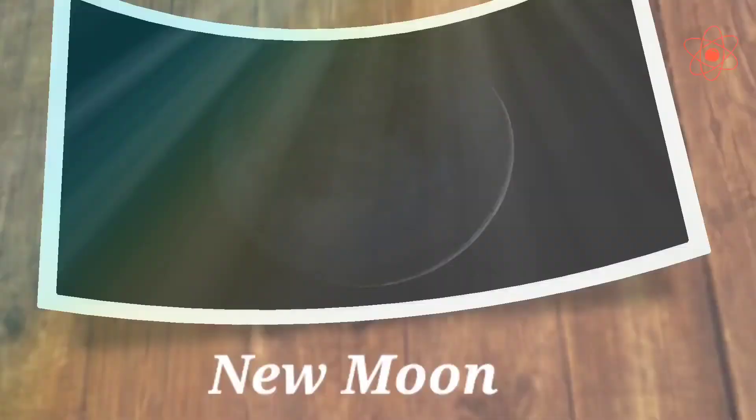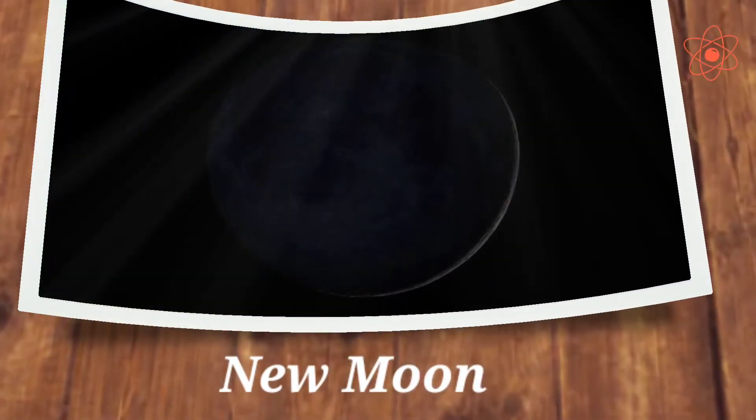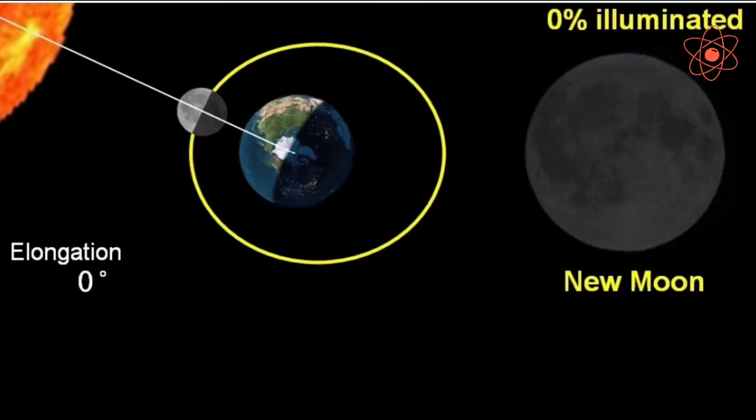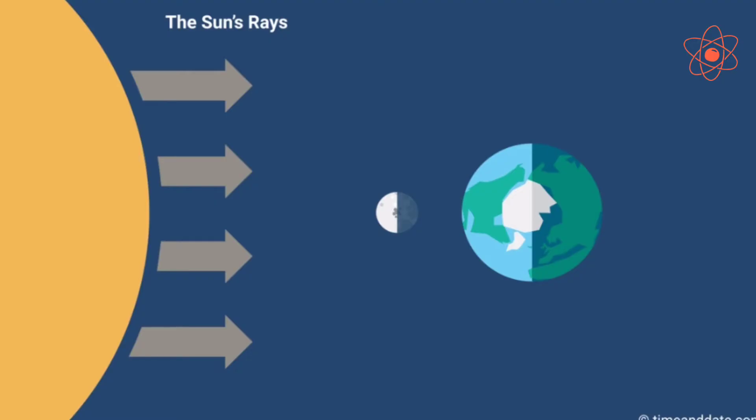When we see no Moon in the sky, the phase is called New Moon. This happens when the Moon is between the Earth and the Sun and the light falling on the Moon reflects back completely in the opposite direction and thus does not reach the surface of the Earth.